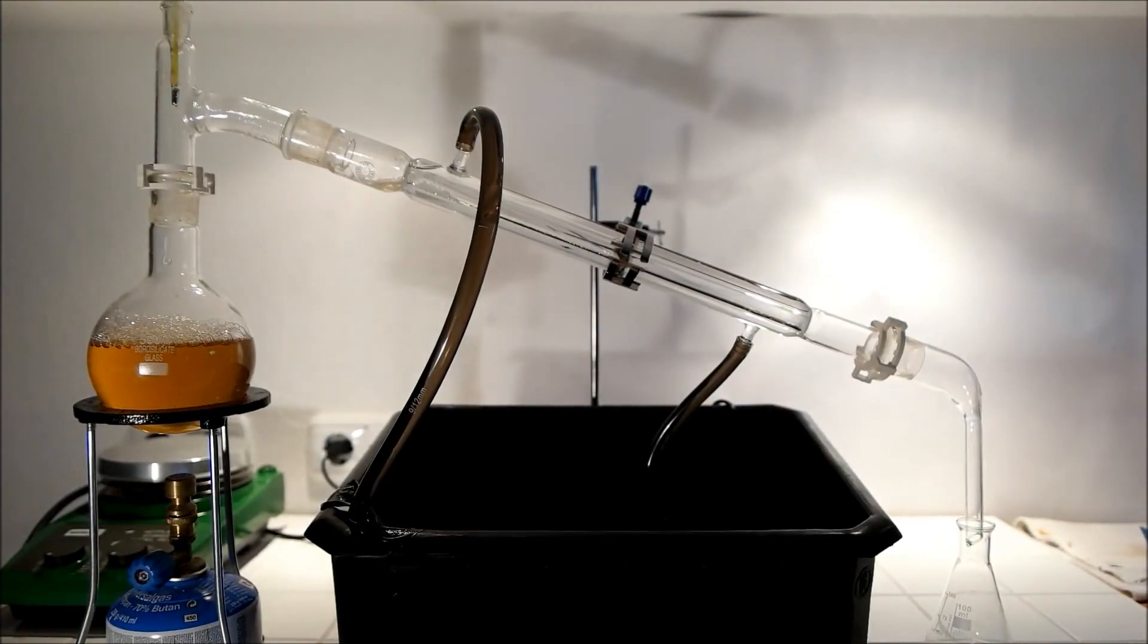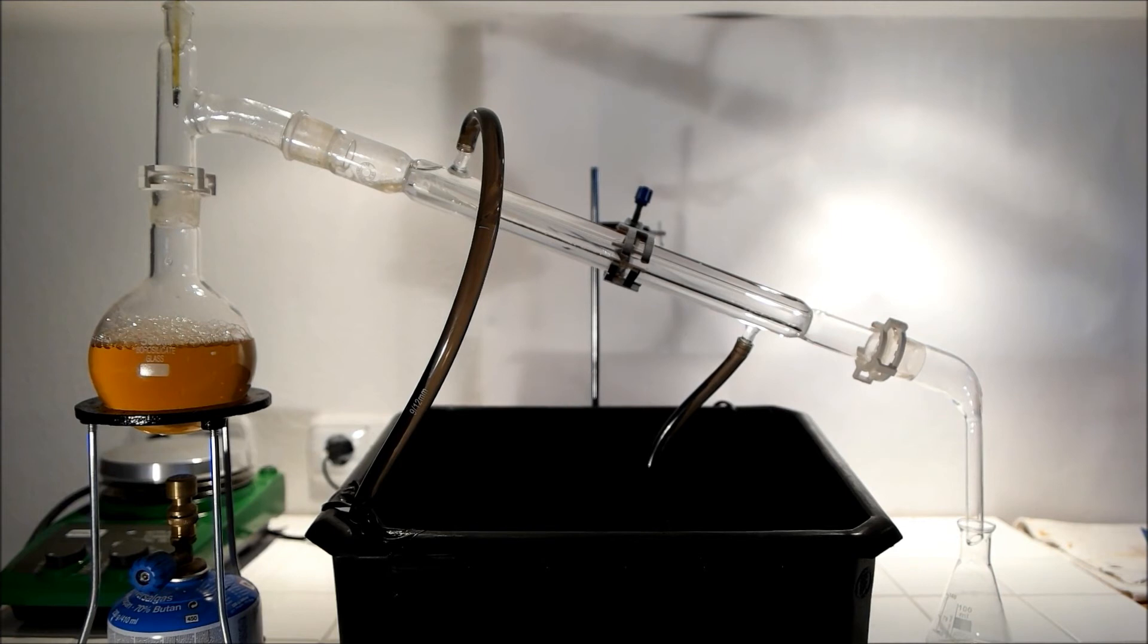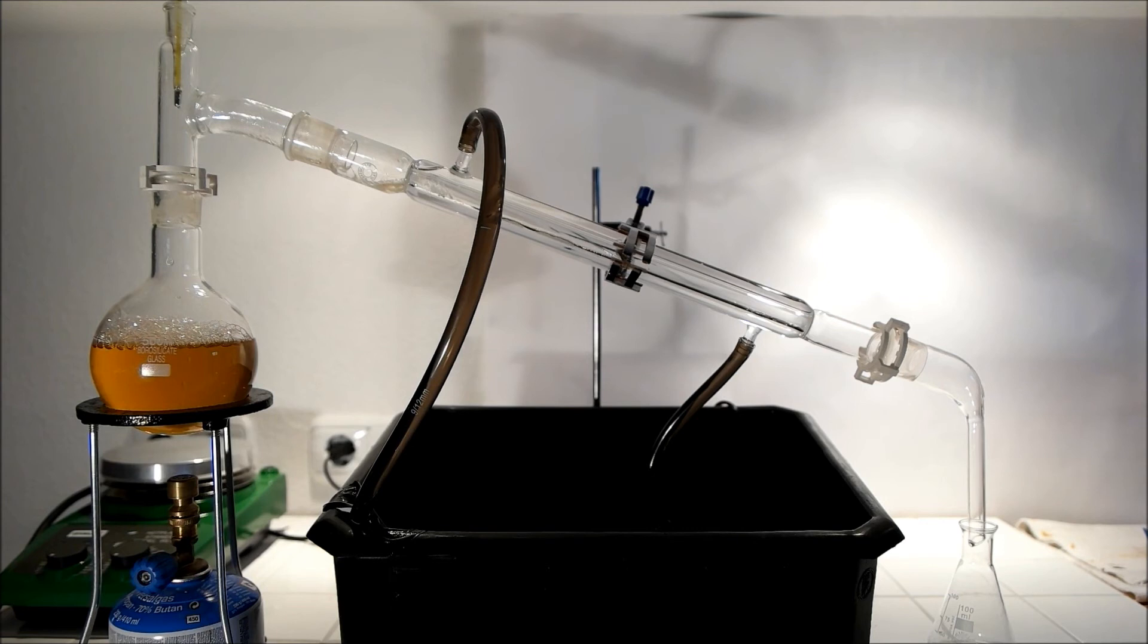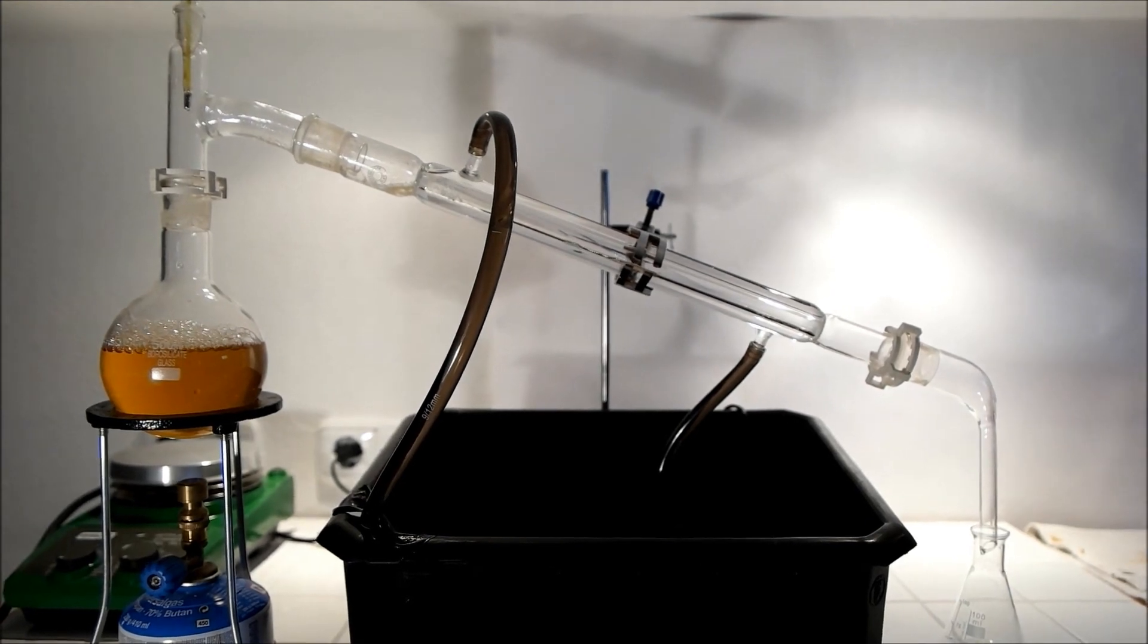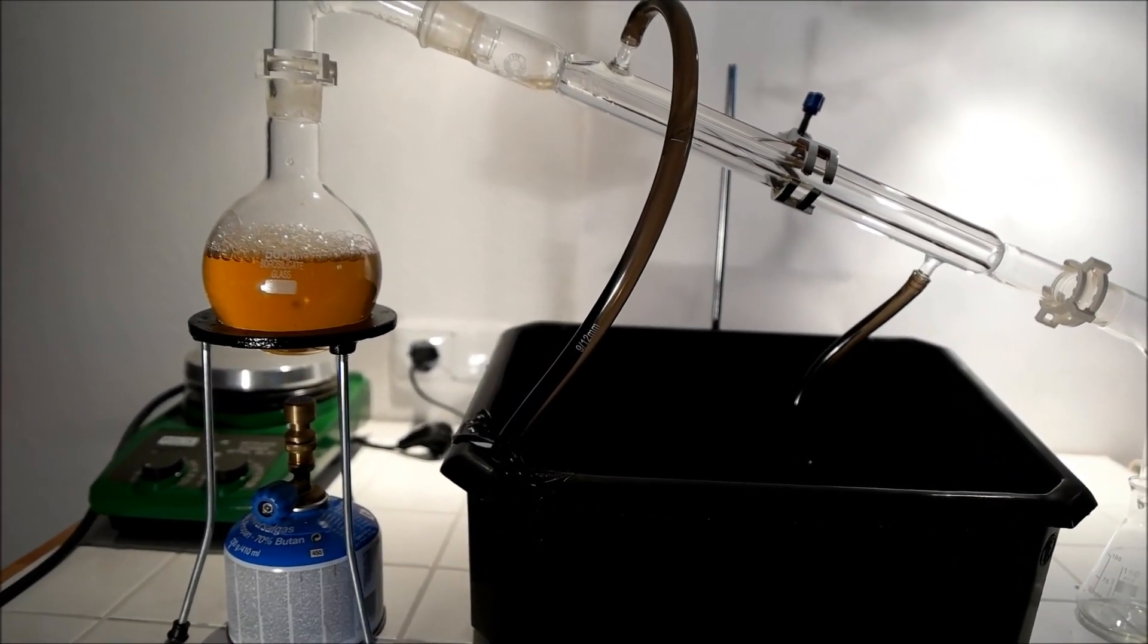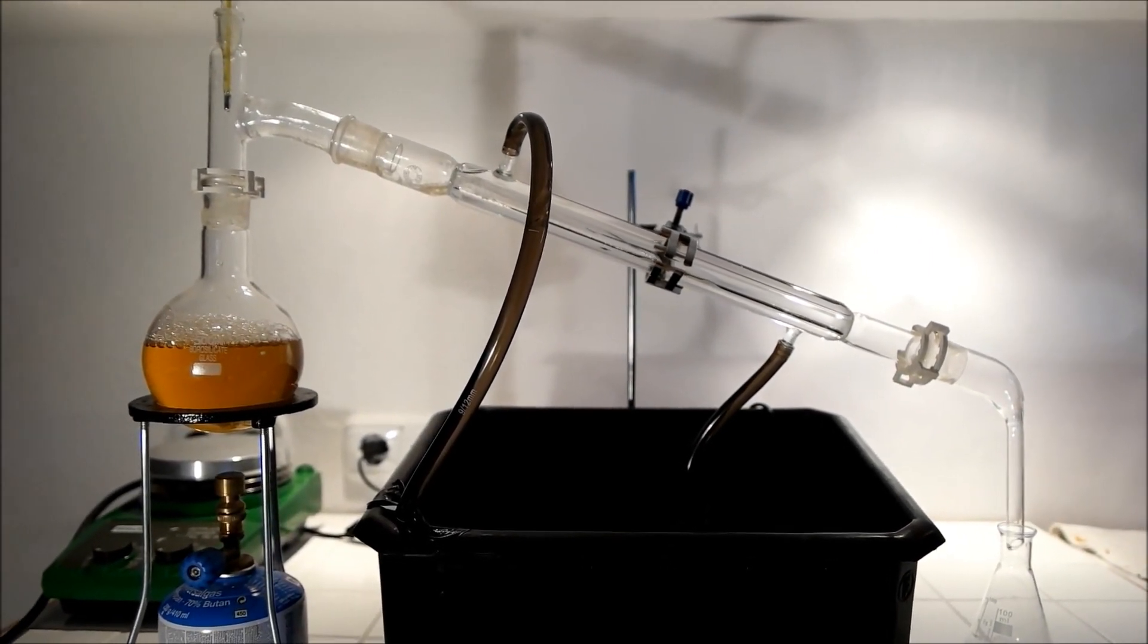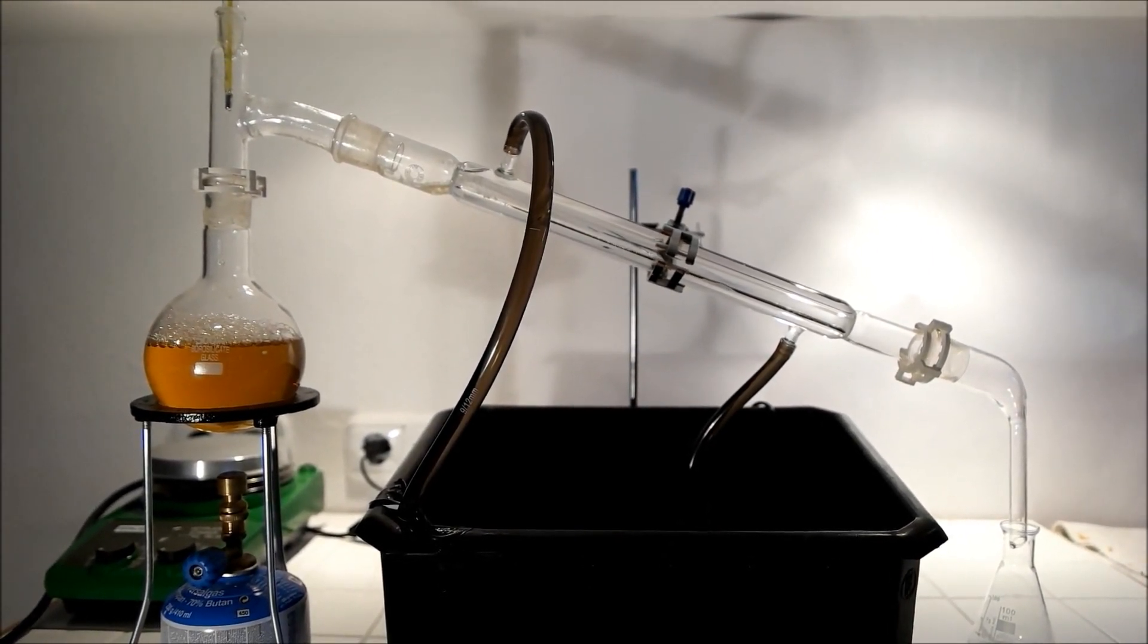Here I'm distilling some beer which is in the round bottom flask to get pure alcohol, as pure as possible. And I know it's not very good to heat up a round bottom flask with a Bunsen burner because there's a lot of pressure on the glass. It would be better to do this in a water bath, just so you know that.